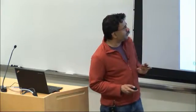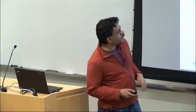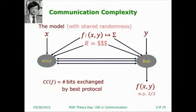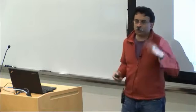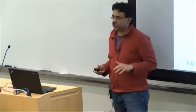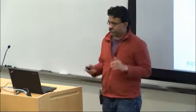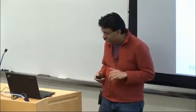Today it will be very important to talk about randomized communication strategies. Here there's some randomness which is shared between Alice and Bob, and they're now allowed to output the correct value with probability at least two-thirds. That's the change in the model, and we can still ask interesting questions about it.